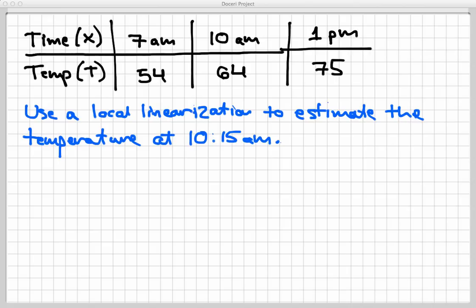The reason we need a local linearization or some kind of estimation technique in this problem is that I don't have a formula for my temperature. I can't just plug in x equals 10:15 a.m. and get the temperature out. So we have to use a pretty good estimation technique, and local linearization is one such technique.